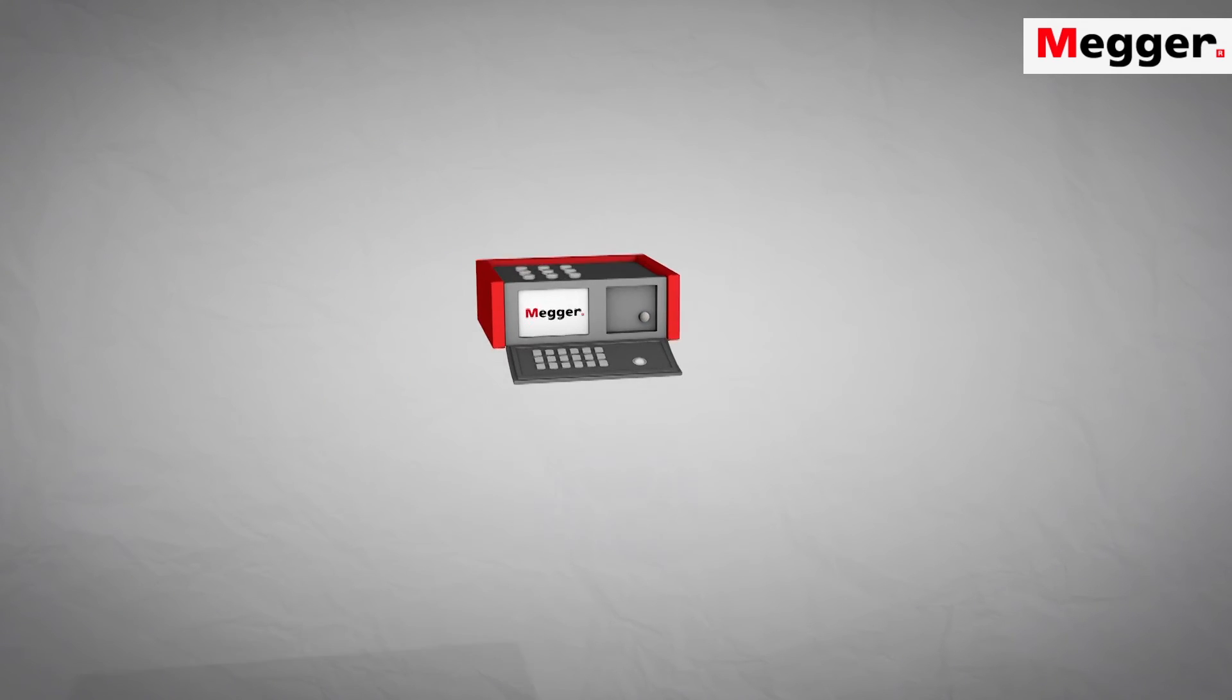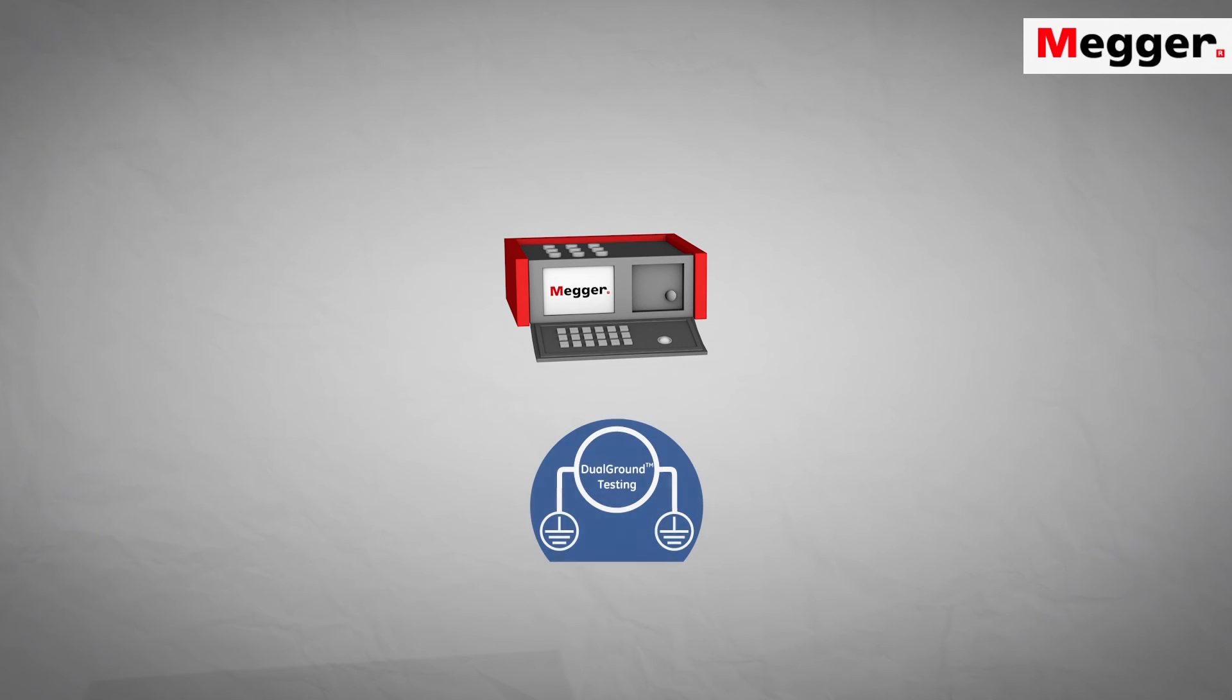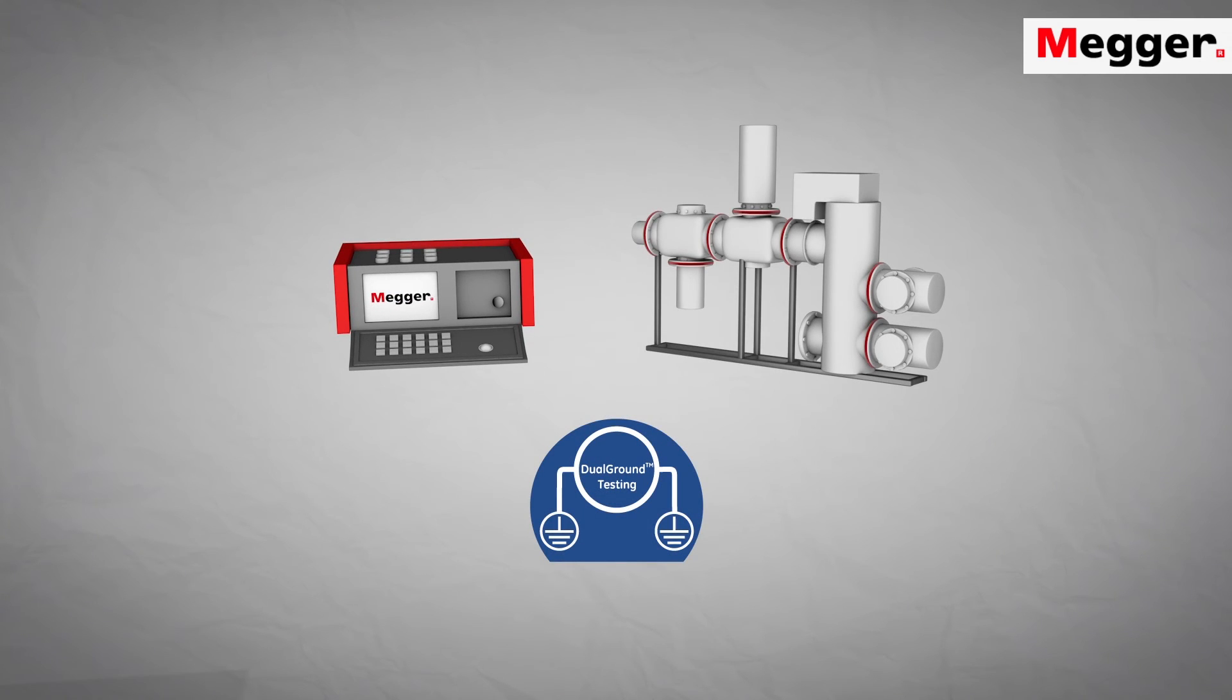With the TM1800 and the dual ground method, you can also time gas insulated switchgear and generator circuit breakers without removing ground connections. Read more about Megger circuit breaker testing at Megger.com.